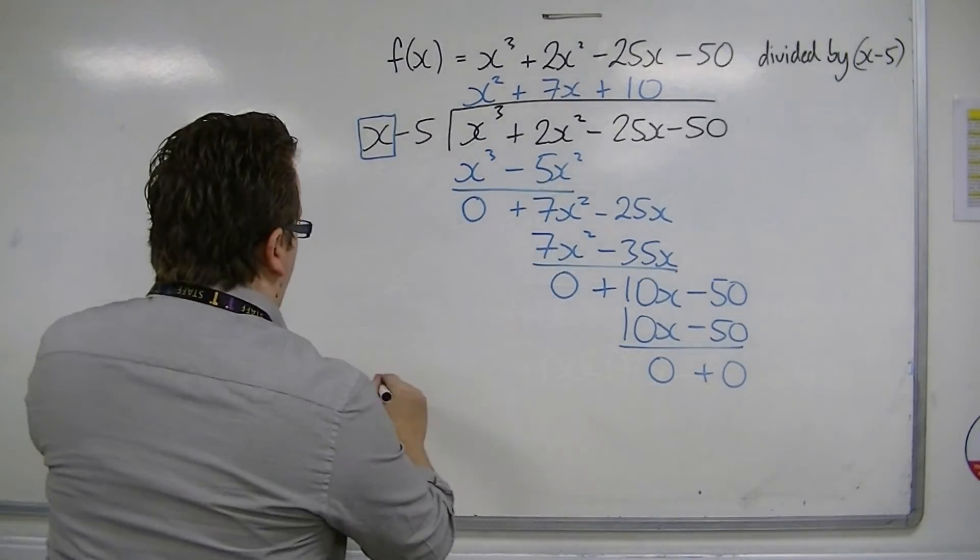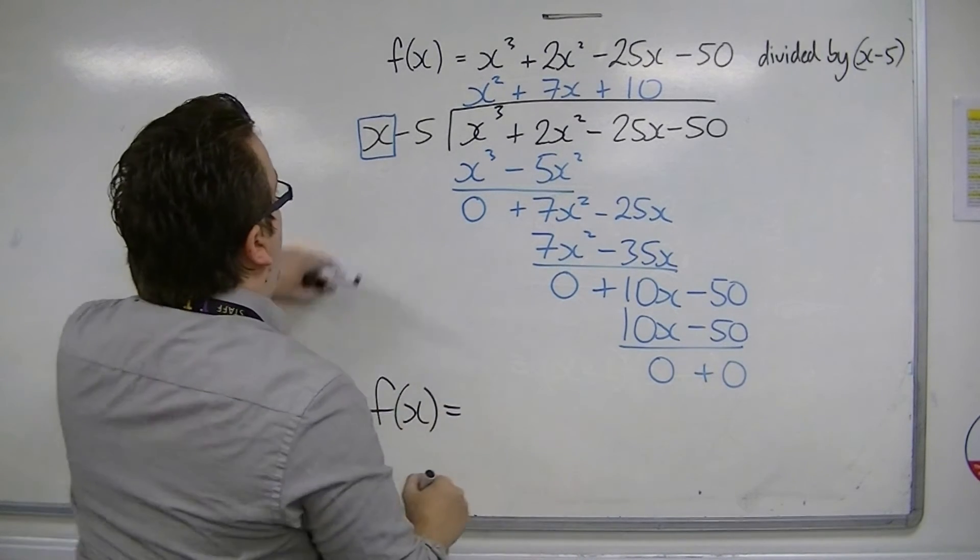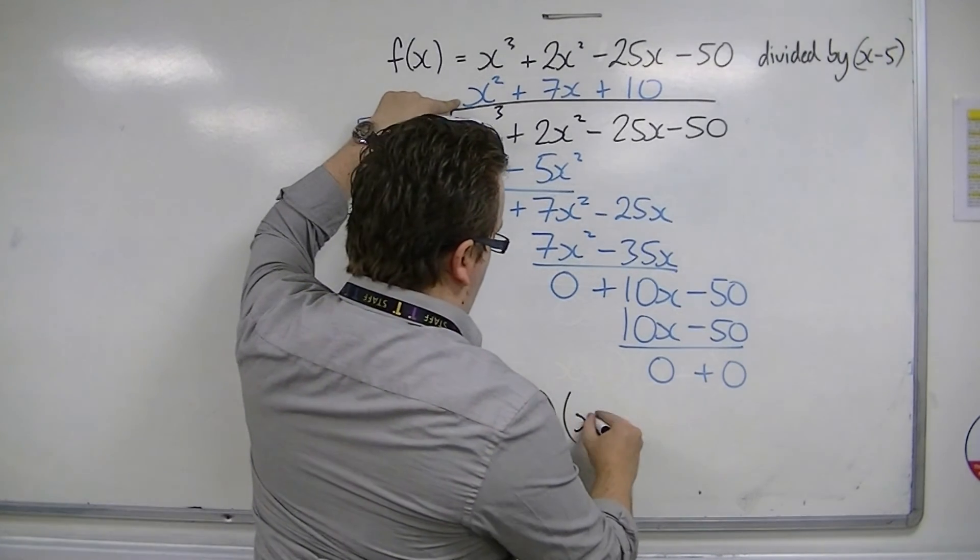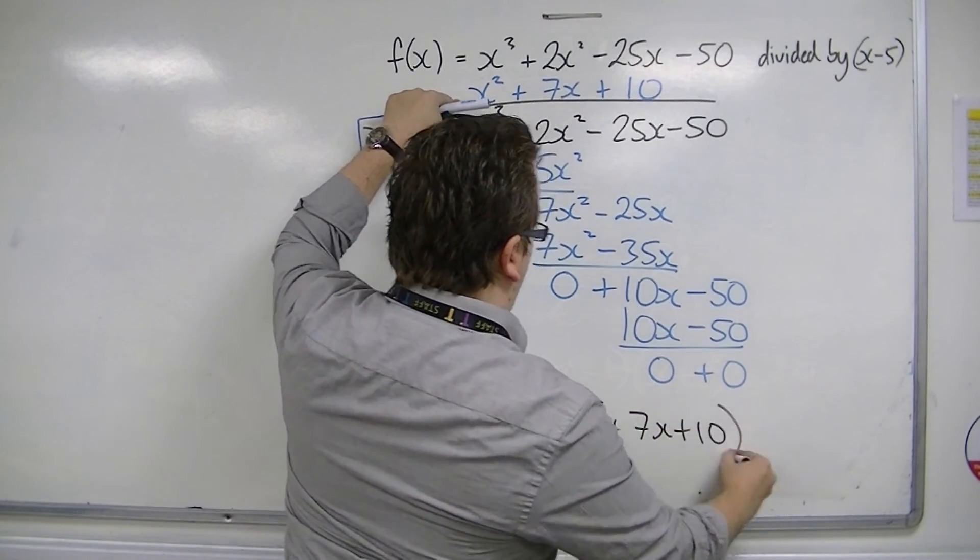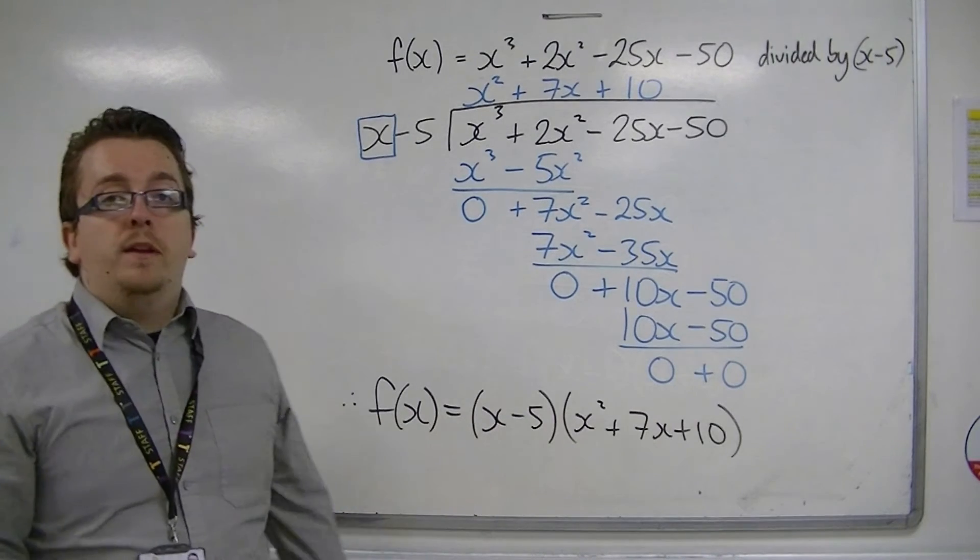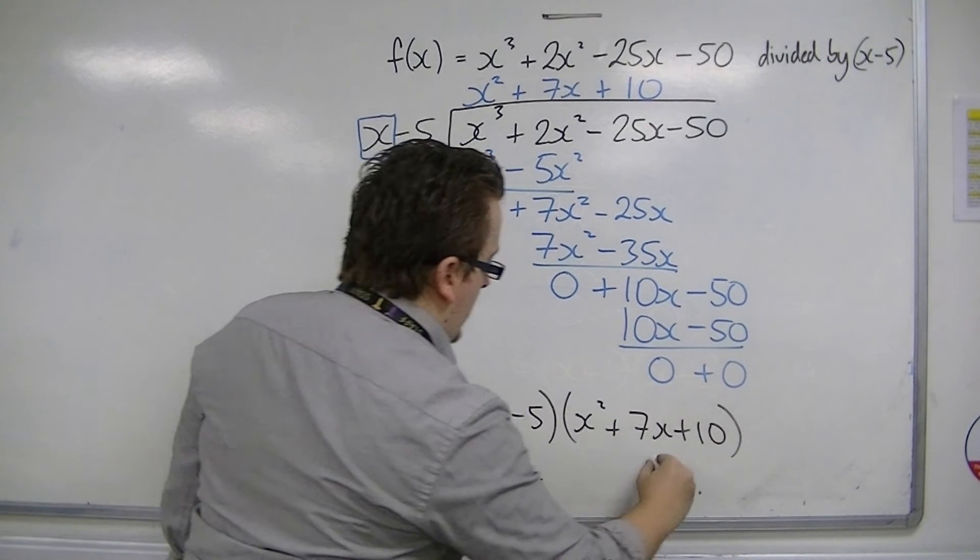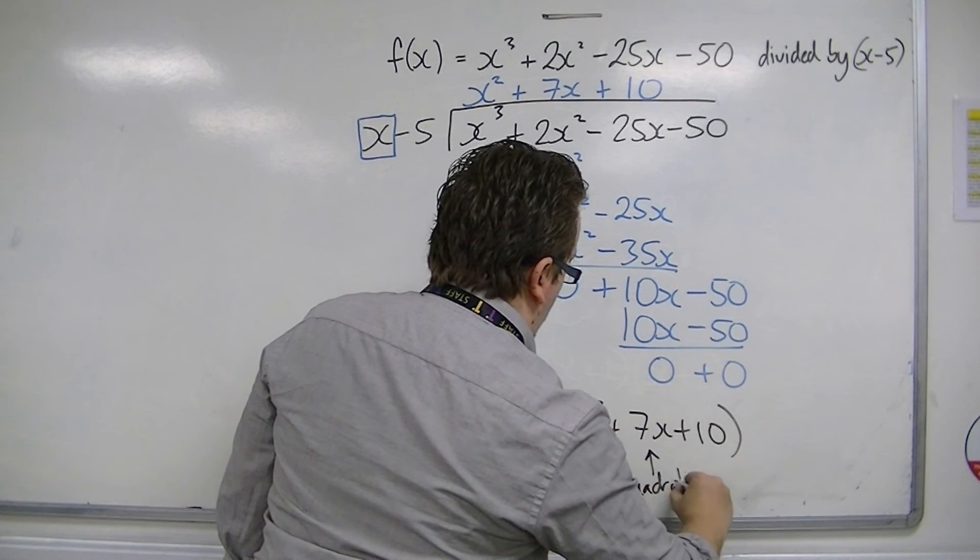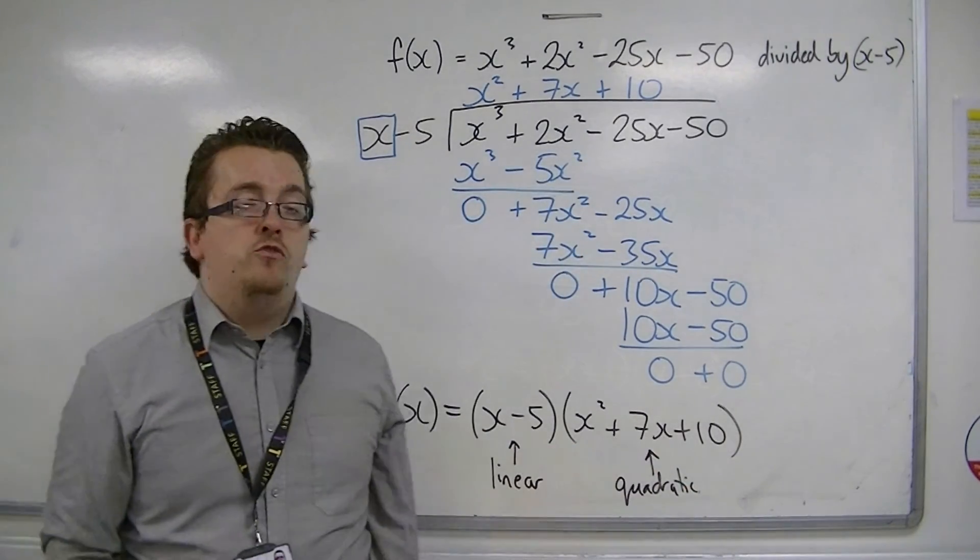And so, f of x can be written as the x minus 5 multiplied by the x squared plus 7x plus 10. So we are part way there to factorising the whole cubic, because now we've been left with a linear term and a quadratic term. And in order to go to the next stage of factorising it completely, you would factorise the quadratic.